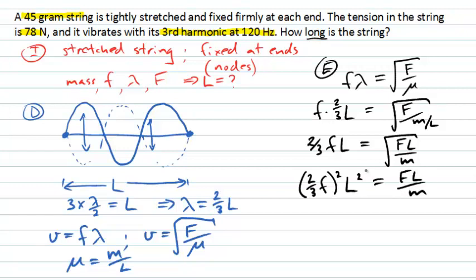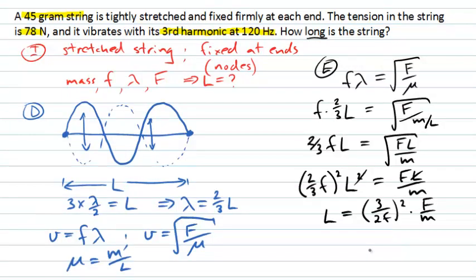This length squared, one of the powers of L, cancels with the other L on the other side. And when I rearrange this, I actually end up with the length of my string being equal to three divided by two F all squared, multiplied by the tension divided by mass. And of course, these are all values that I have now.